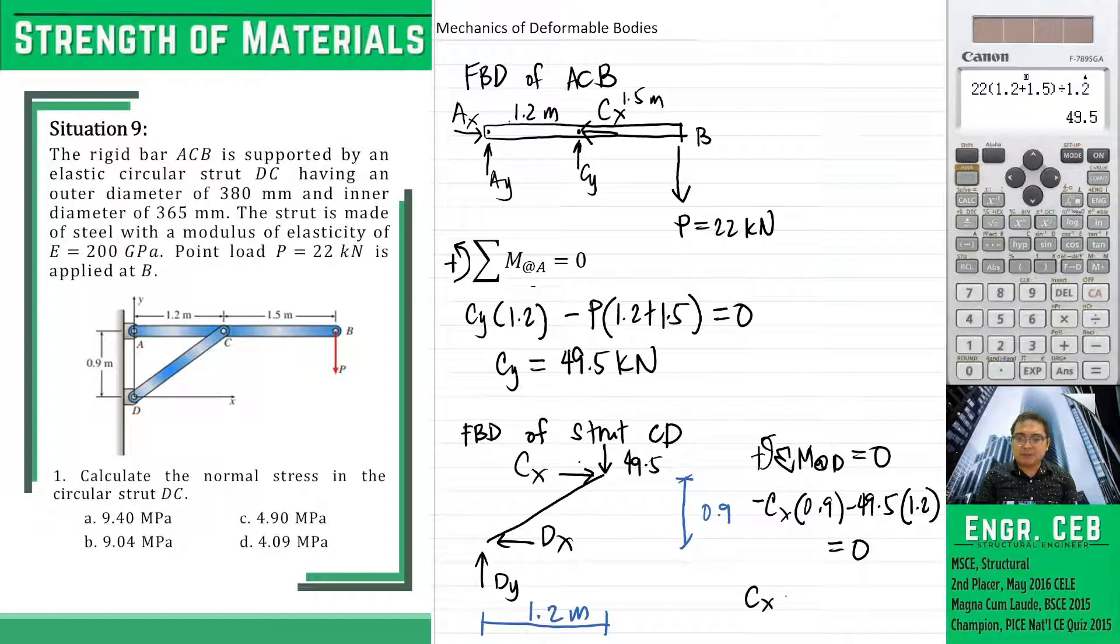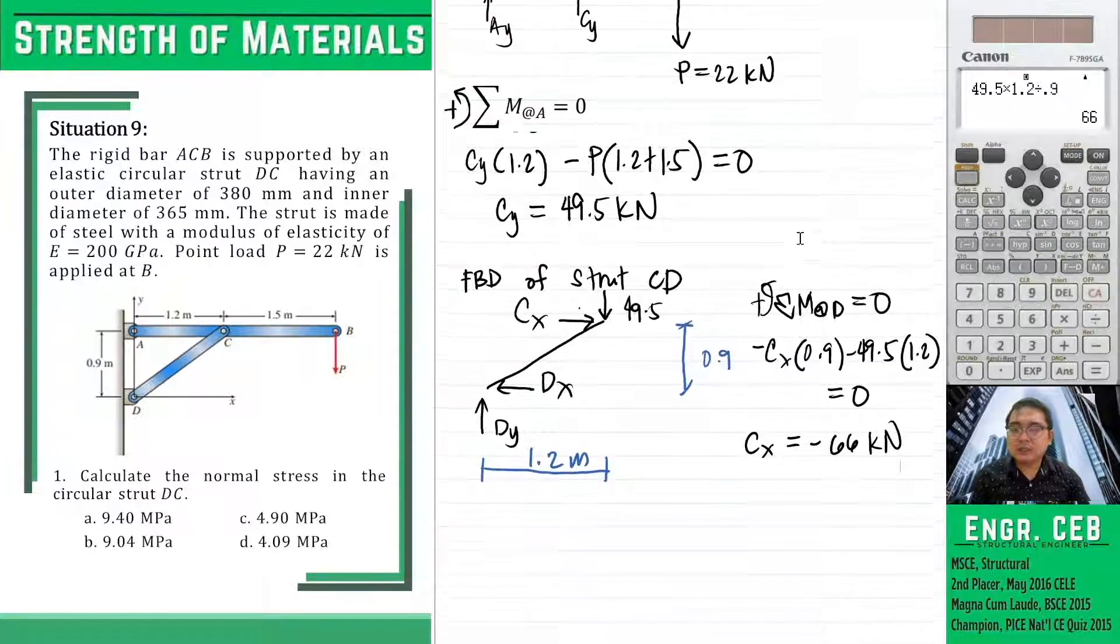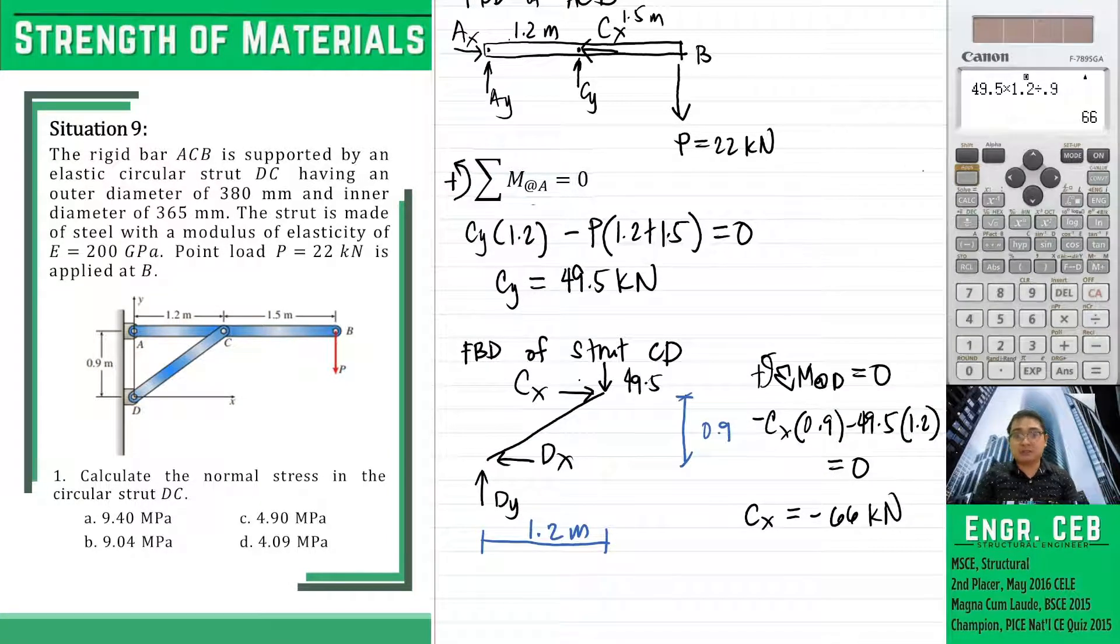And we can solve for the value of CX and that is negative 66 kN. So if it is negative, it just means that we have used the wrong direction of CX. So if we're going to correct the direction of CX, it must be to the right. So this is now the corrected direction.